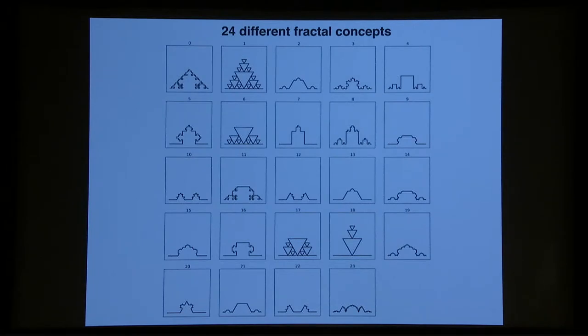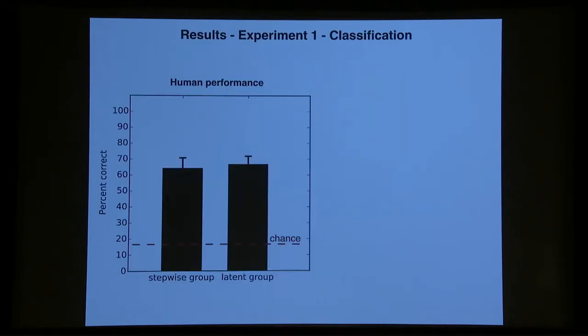Here's the full set of stimuli that we provided to participants. And here's what we found. The y-axis is the percent correct in this six-way judgment, and both groups were well above chance, about 65% correct in their judgments, and there was no detectable difference between the groups, but we weren't necessarily looking for one.